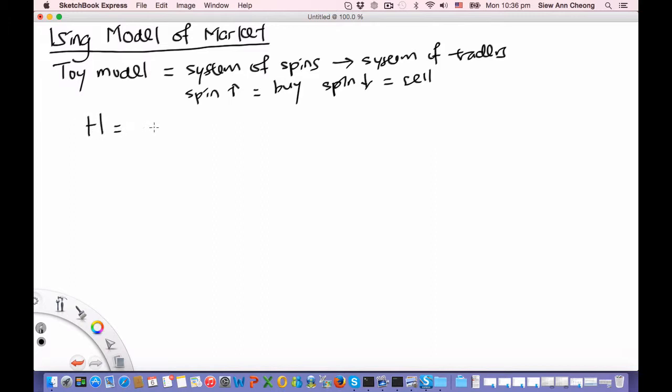The Hamiltonian of the Ising model is given by sum ij, jij, si, sj, plus a sum over i of hi, si, where the hi plays the role of a magnetic field. And the fact that the trading decision is determined by a magnetic field means that this mimics the fundamental value of the stock being traded.